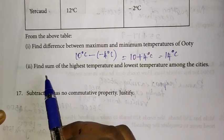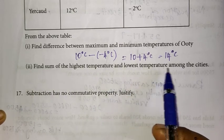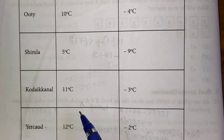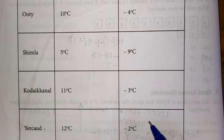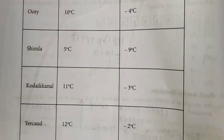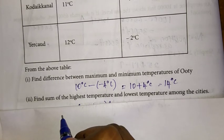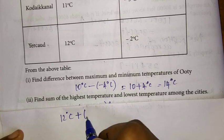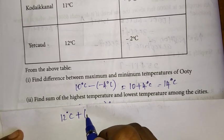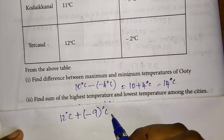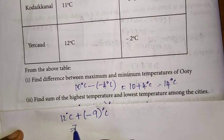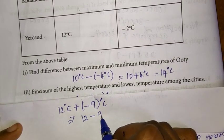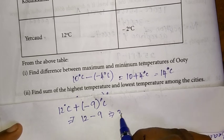Second part of question 16: find the sum of the highest and lowest temperatures among the cities. The highest temperature is 12°C and the lowest is minus 9°C. Adding: 12 plus into minus 9. We get 3°C as the answer.